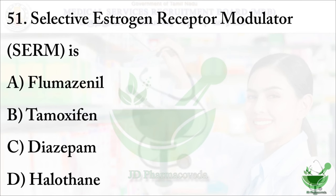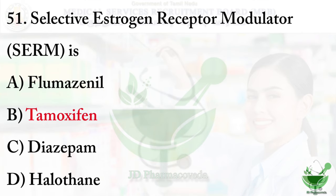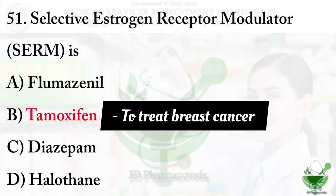Question number 51: Selective estrogen receptor modulator is. The options are: option A, Flumazenil; option B, Tamoxifen; option C, Diazepam; and option D, Halothane. The right option is option B, Tamoxifen. Tamoxifen is a hormonal therapy used to treat estrogen receptor-positive breast cancer.